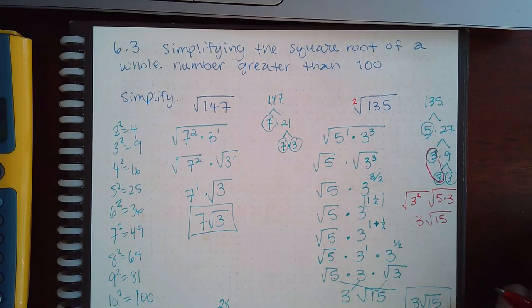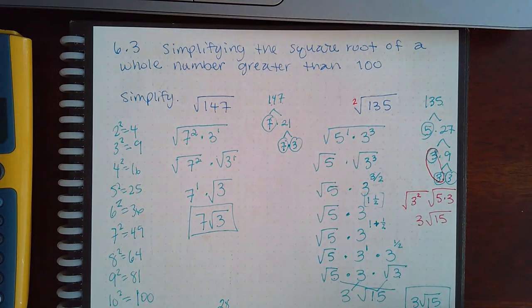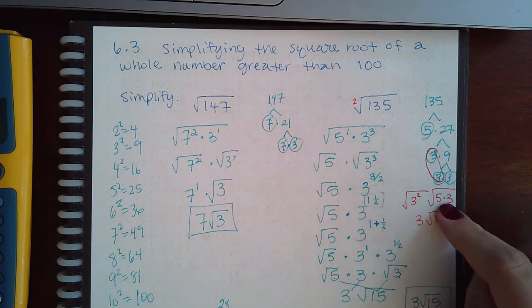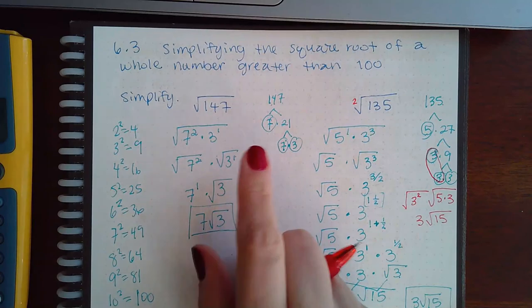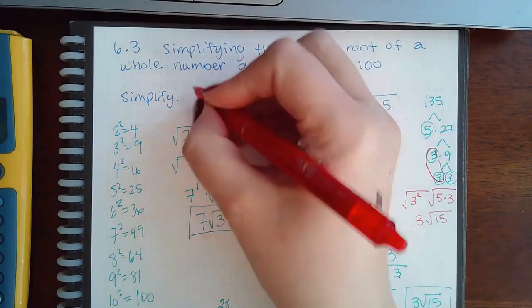And then here these would cancel, and I'd have 3, and the two guys that were left over I could multiply them together and I'd get 3 square root of 15. So you can do it the long way if you want, or you can just group them with squares and the leftover people put them in their own parentheses.